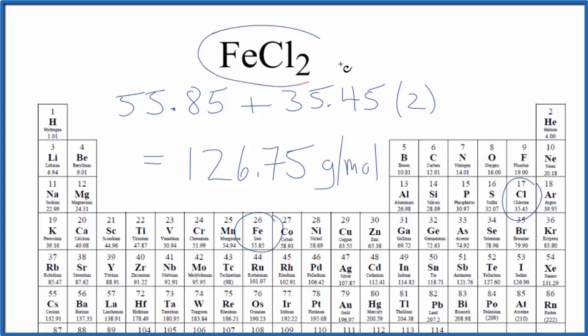That means if we have one mole of FeCl2, this iron 2 chloride, it's going to have a mass of 126.75 grams.